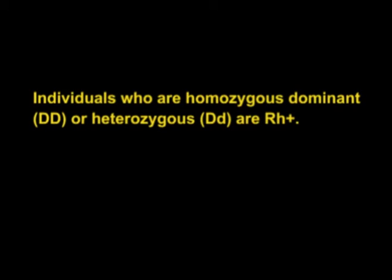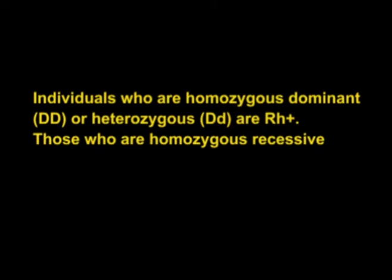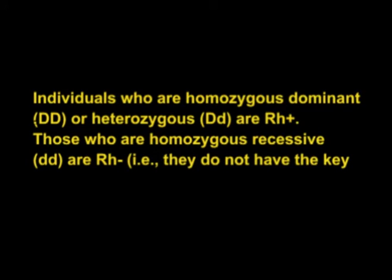Despite its actual genetic complexity, the inheritance of this trait can usually be predicted by a simple conceptual model in which there are two alleles: capital D and small d. Individuals who are homozygous dominant (DD) or heterozygous (Dd) are RH positive. Those who are homozygous recessive (dd) are RH negative — that is, they do not have the key RH antigens.